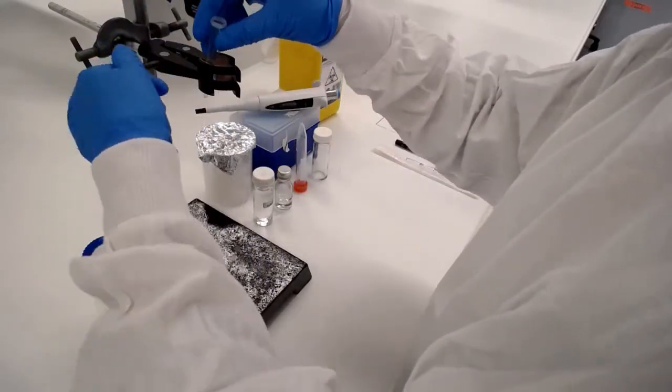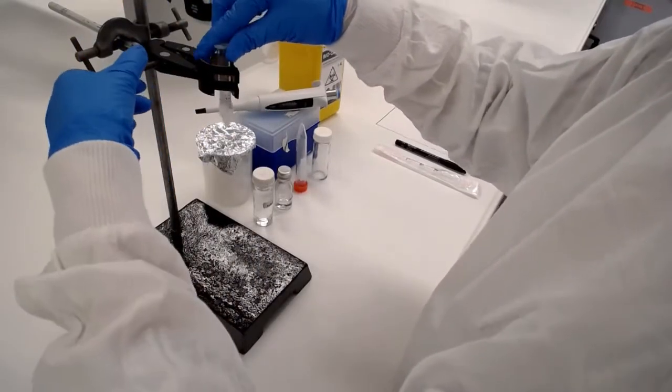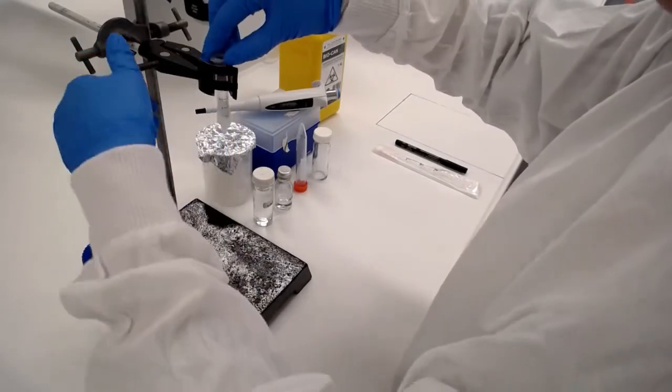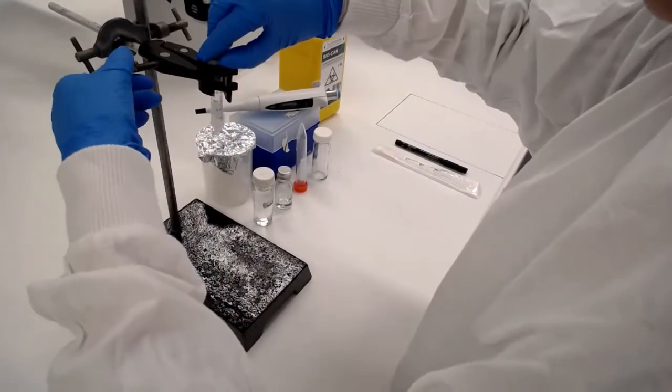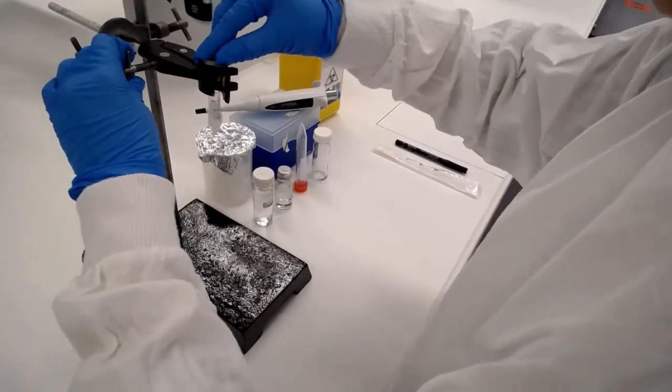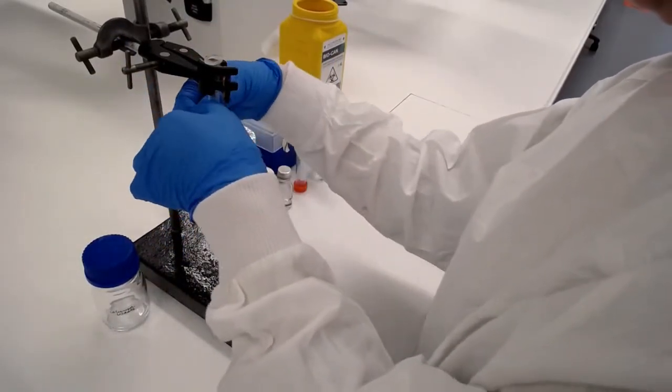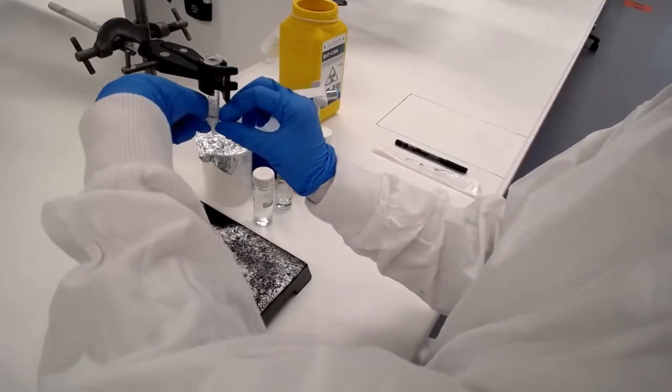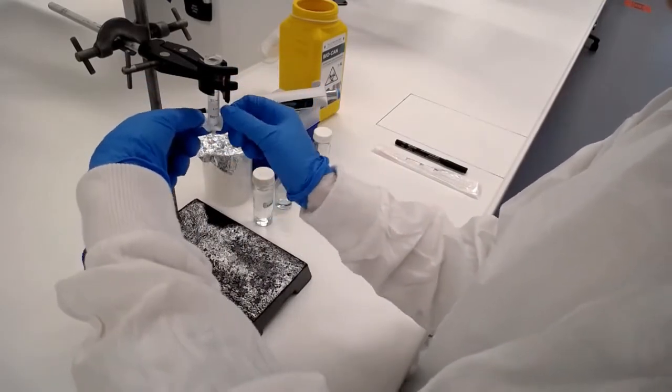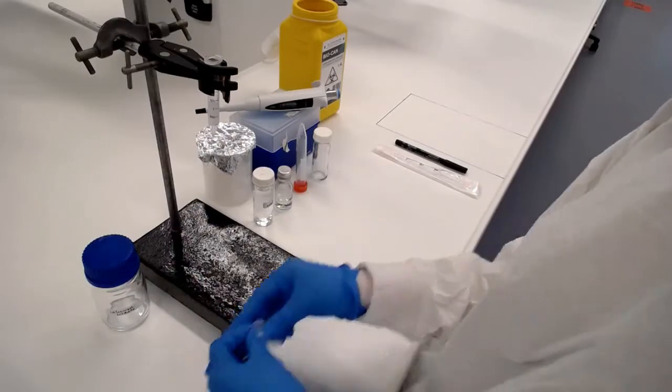First, we set up our column. The column is just a syringe barrel with some nickel agarose in there, which you can see has a blue color, then some cotton wool at the bottom, and it's covered by parafilm at both ends just to keep the column moist. We need to take that parafilm off before we do anything else.